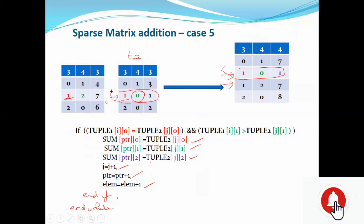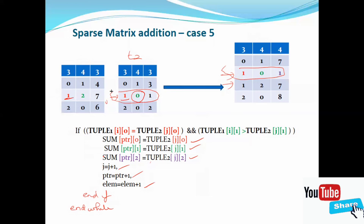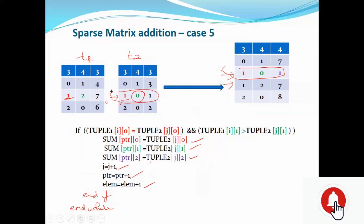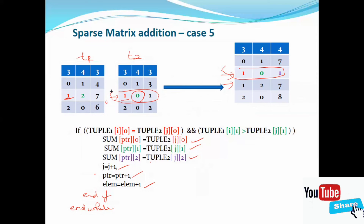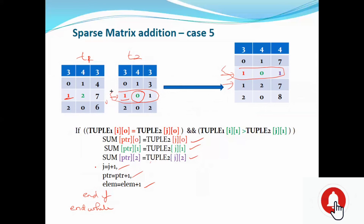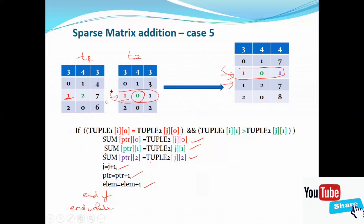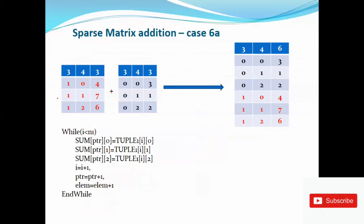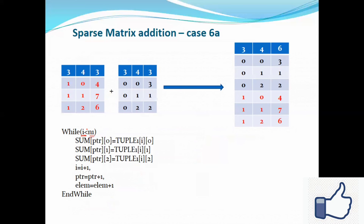We will include the i-loop and open the i-loop. Apart from this, if the i condition is going to n, we can see the next condition. In this case, we would say i is less than or equal to n1, where n1 is the number of nonzero elements in tuple 1.